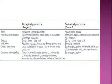Cevimeline is an acetylcholine analog given 30 mg three times a day orally. It is indicated in Sjögren's syndrome. The contraindications are the same as pilocarpine, with additional contraindication in cases of significant cardiovascular and pulmonary disease history.